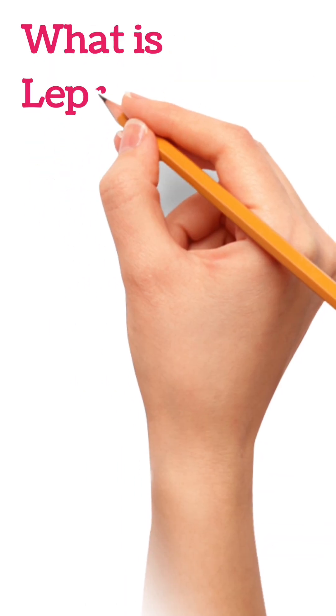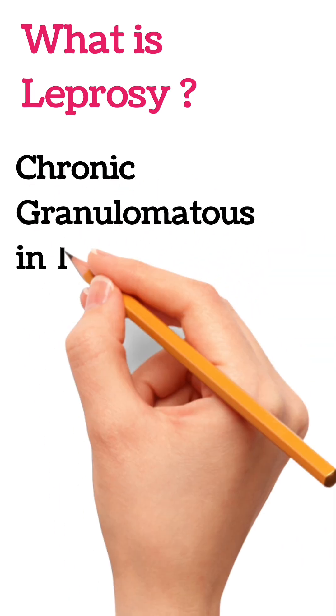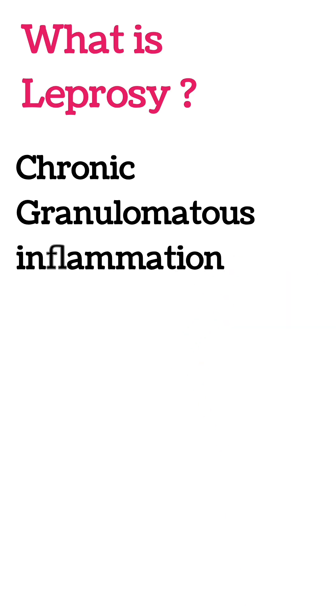Hello everyone. In this short tutorial I will discuss about the leprosy definition and the site of involvement of leprosy. This is a short video on the introduction of leprosy. So what is leprosy? It is a chronic granulomatous inflammation — a specialized type of chronic inflammation in which granulomas will form.